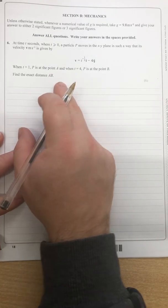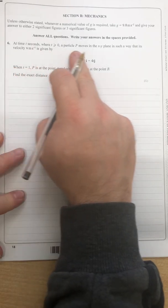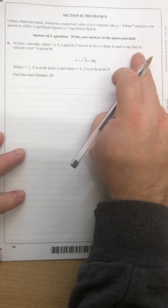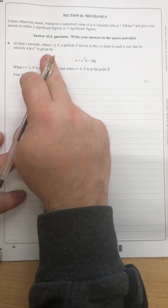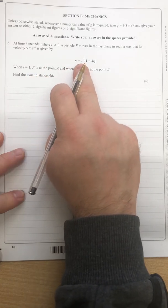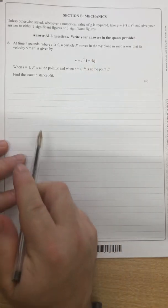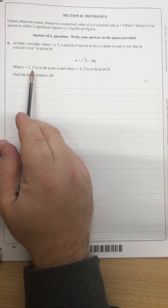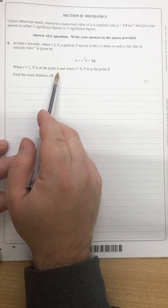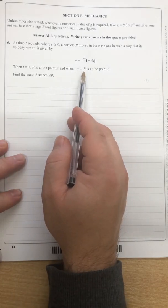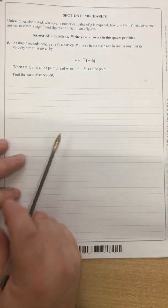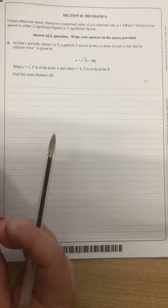Going into the question, I'm just absorbing this information in here. We're talking about velocity given, it's expressed in vector form isn't it, and it's in terms of t. And then it goes on to say when t equals one, p is at the point a. When t equals four, p is at the point b.